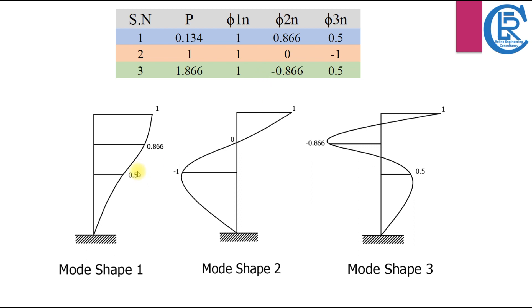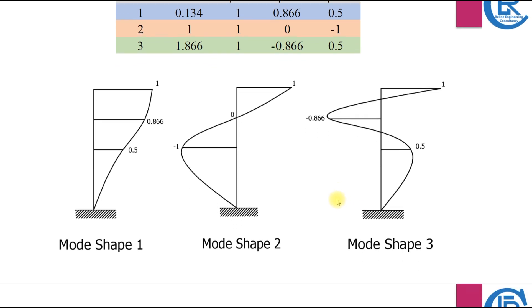We plot positive values on the right side and negative values on the left side — this is the standard practice for drawing mode shapes. The plotted mode shape graph provides a visual representation of how the building responds to dynamic forces at different frequencies. Each curve and deflection indicates a unique mode shape associated with a specific natural frequency.